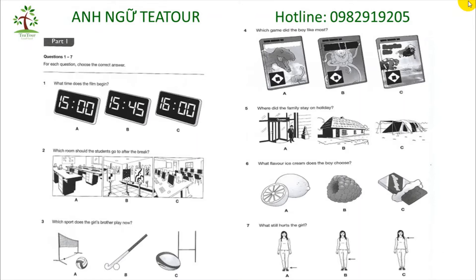Question 6: What flavour ice cream does the boy choose? Which flavour ice cream are you going to have? I can't decide between the chocolate one and the raspberry one. What do you think? I had the chocolate one last time. It's not the best I've ever had, but the raspberry's really nice. You can really taste the fruit. Which one are you going to have? I'm going for lemon this time. I haven't tried that one yet. I'm not keen on lemon. I'm going to go with the one you recommend. Okay. I hope you like it.